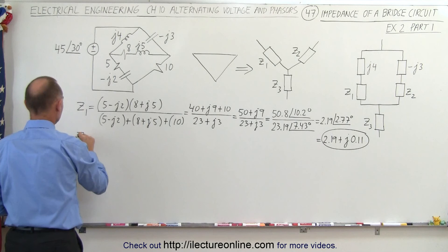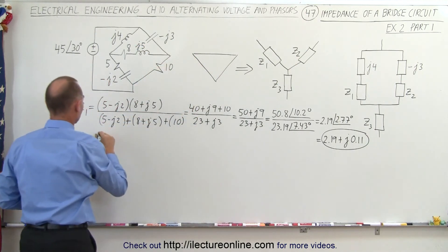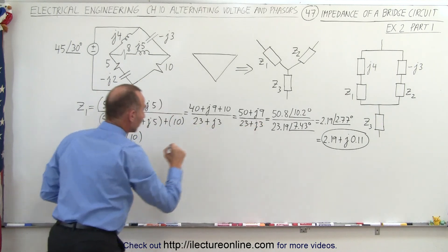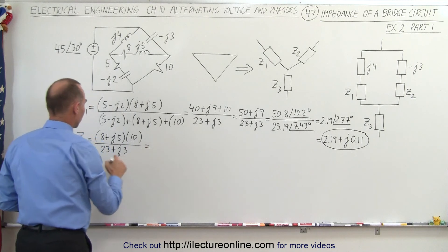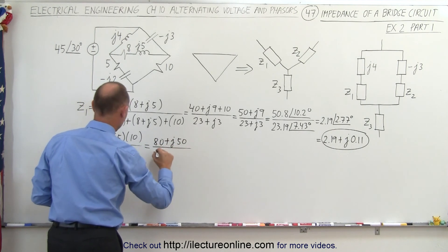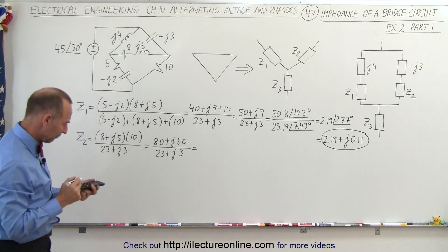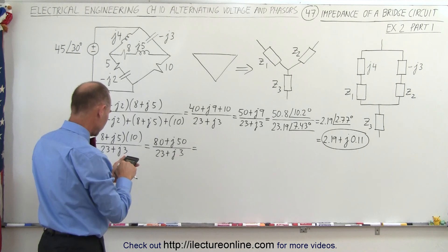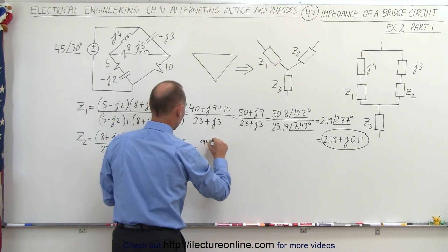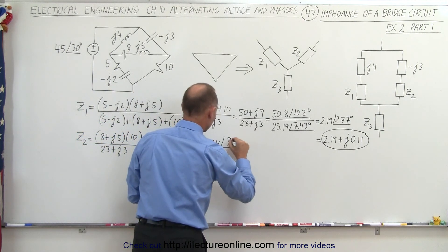Now we look for Z2. Z2 is going to be situated between these two branches, so we multiply these two branches together. We end up with (8 plus J5) multiplied by 10, divided by the sum of the three, which is the same as what we have — 23 plus J3. That gives us 80 plus J50 divided by 23 plus J3. To divide that again, we convert into magnitude and phase angle format: the square root of (80 squared plus 50 squared). The phase angle is the inverse tangent of (5 divided by 8), which is 32 degrees.